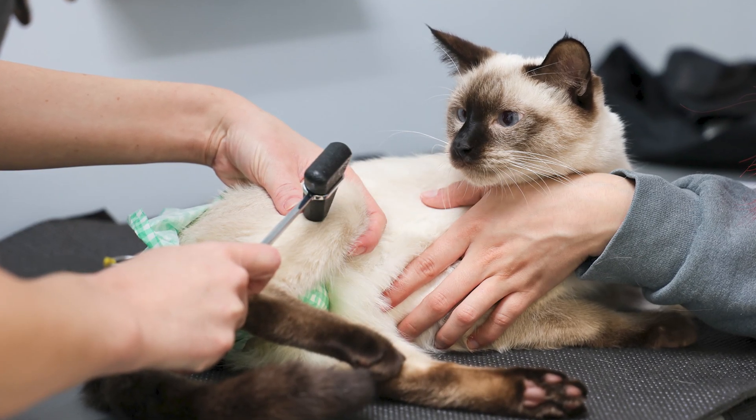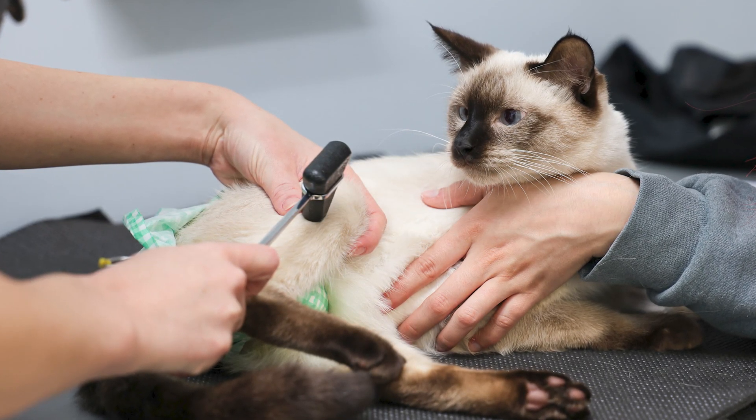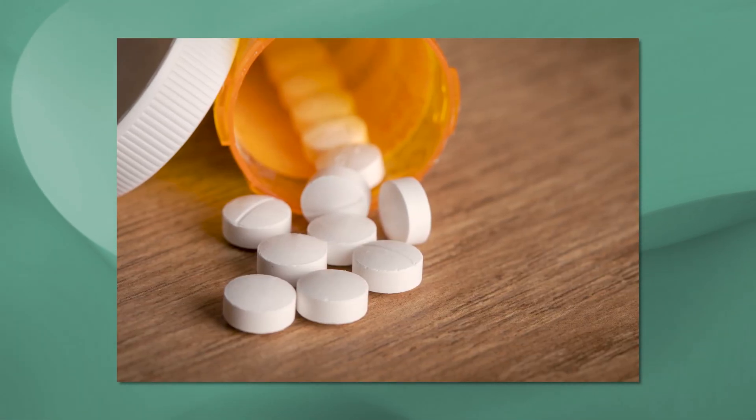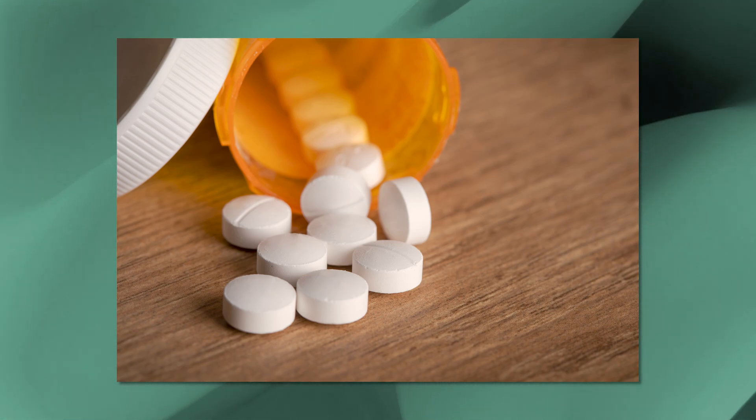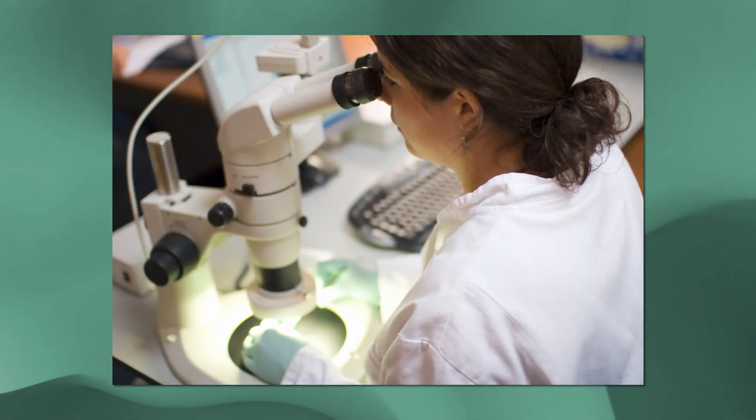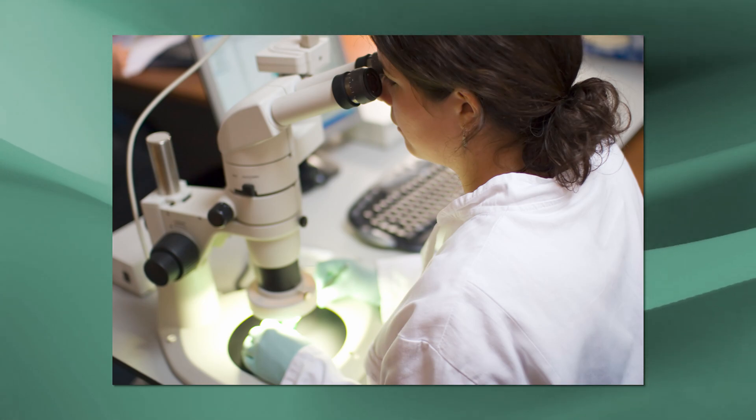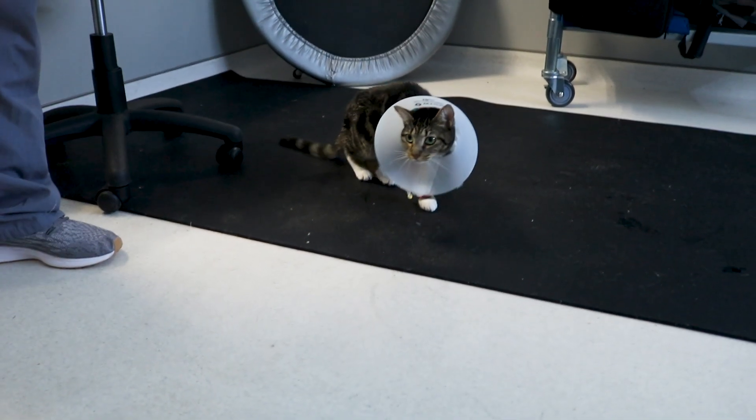There aren't many good treatments for FIP currently. Oftentimes we'll use immunosuppressive medications because there's a theory that the immune system is responsible for that transformation of the coronavirus within a cat's body. There is a new experimental treatment that's out — not approved by the FDA yet — but there have been some studies through universities that have shown really good promise, because previously the outcome for cats with FIP was very poor. Most of them will succumb to the disease, but some of the newer treatments are showing improvement and sometimes even what we suspect to be a cure.